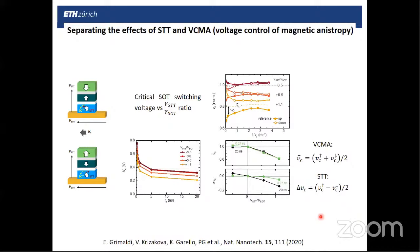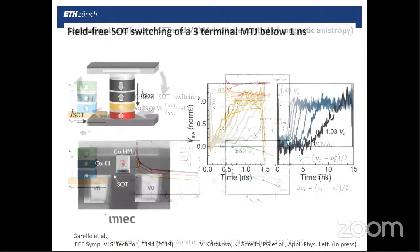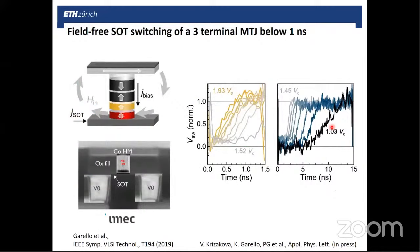So by reversing the reference layer, the spin transfer torque changes sign, whereas the VCMA effect is even upon reversal of the reference layer. So the two effects can be distinguished by performing measurements with reversed reference layer. One can observe the changes of the critical voltage for switching due to VCMA and STT. We find that both effects are present, but the most prominent and important one for fast switching is actually VCMA, not really STT, at least at the small current densities that we use at this time.